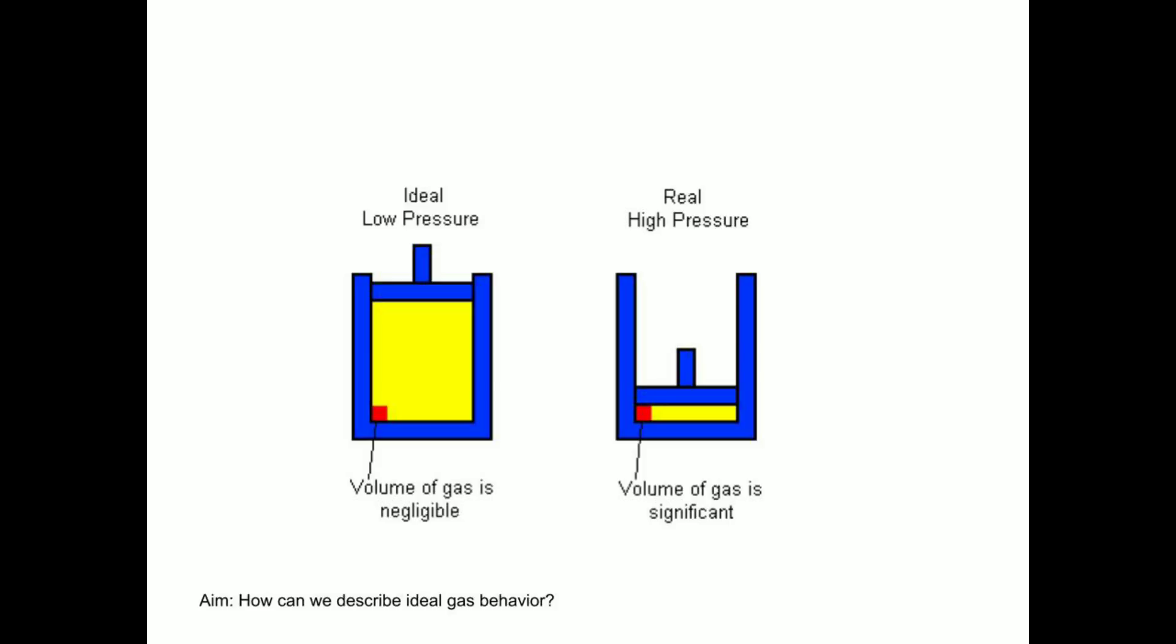Remember, in the summer, the temperatures are high, and the pressure to do schoolwork is low. You can see in the image to the left that the red particle has almost no significant volume compared to the yellow space. This is under low pressure.